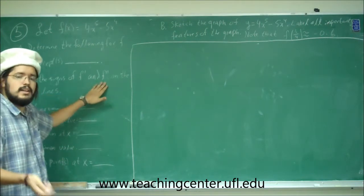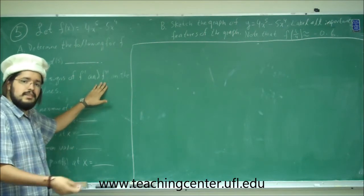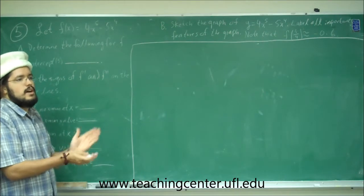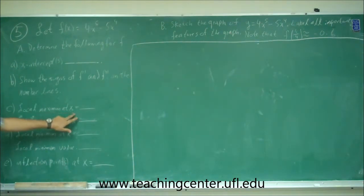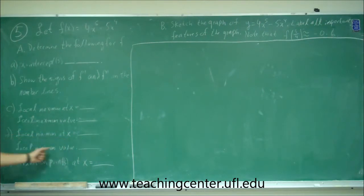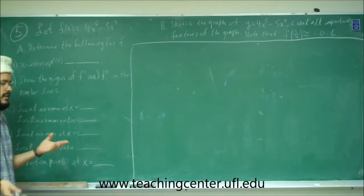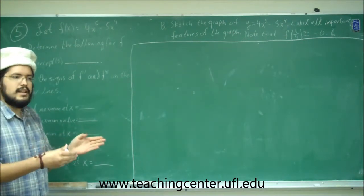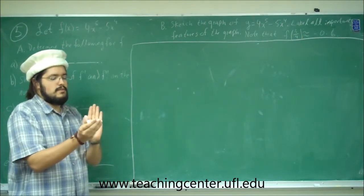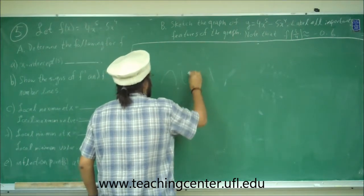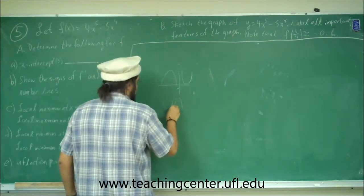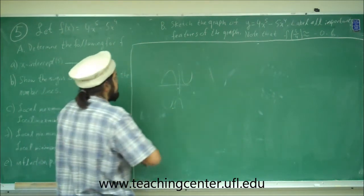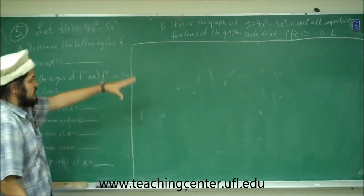For the second derivative test, take the second derivative, get our critical numbers, and do some test points. If it's a positive number, it's concave up; if it's a negative number, it's concave down. Then part c says find the local maximum at x and the local maximum value, the local minimum at x and its local minimum value. Then we've got to find the inflection points — where it goes from concave down to concave up, or concave up to concave down. At that x value, there's an inflection point. We'll also sketch the graph once we have all this information.